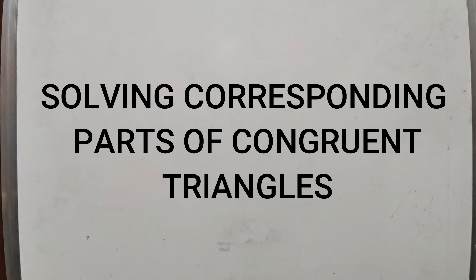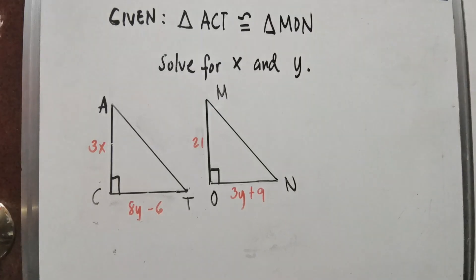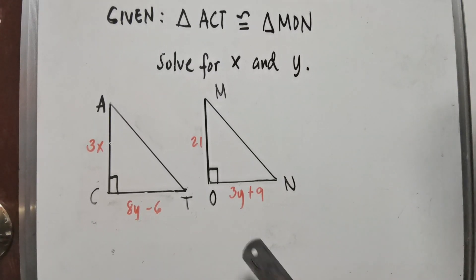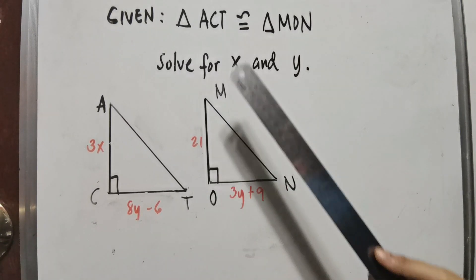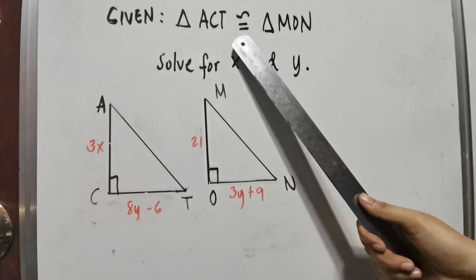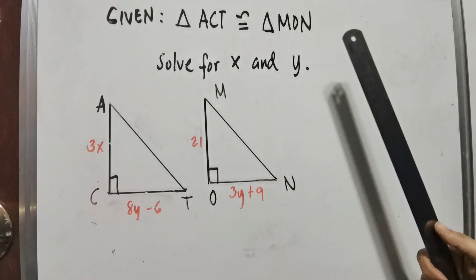In this video, we will discuss how to solve corresponding parts of congruent triangles. For our first example, we have two triangles named triangle ACT is congruent to triangle MON.